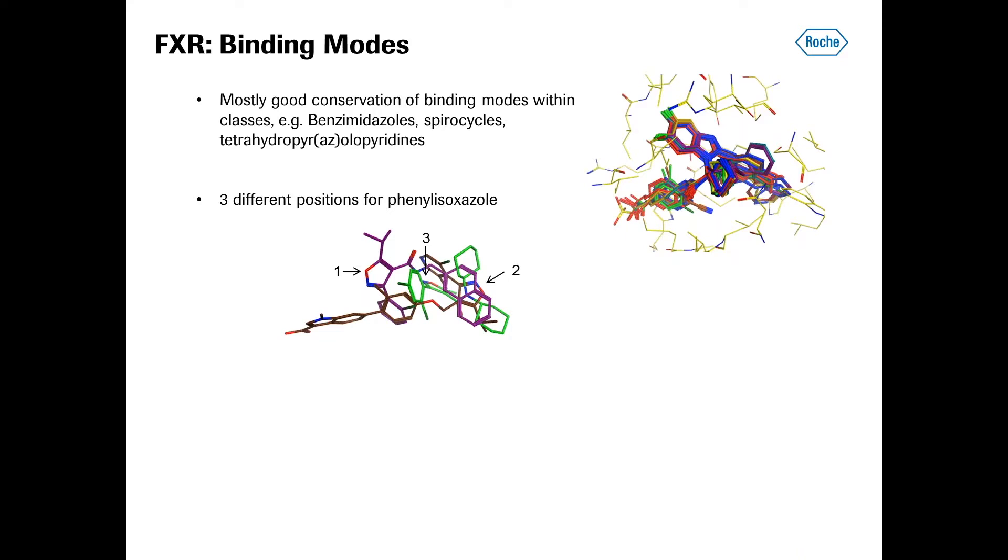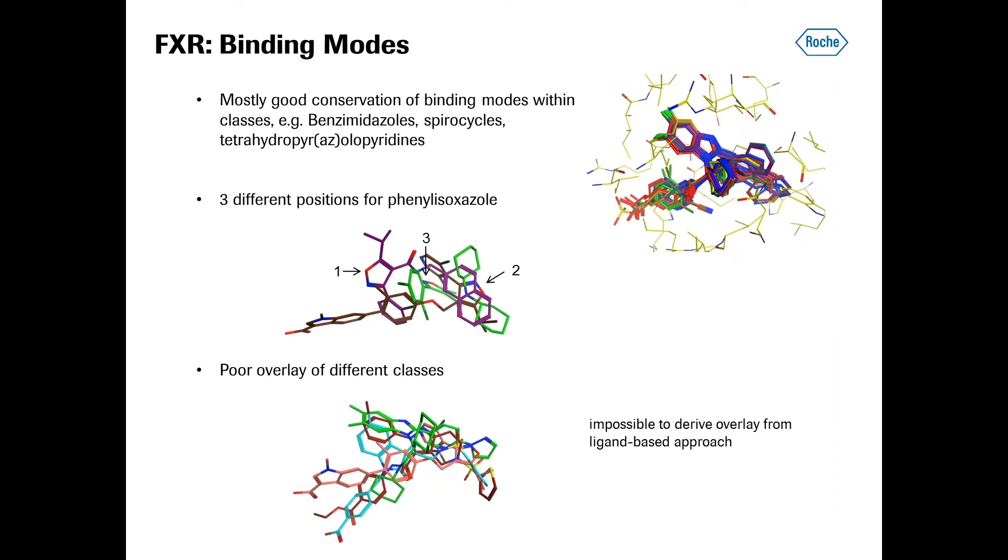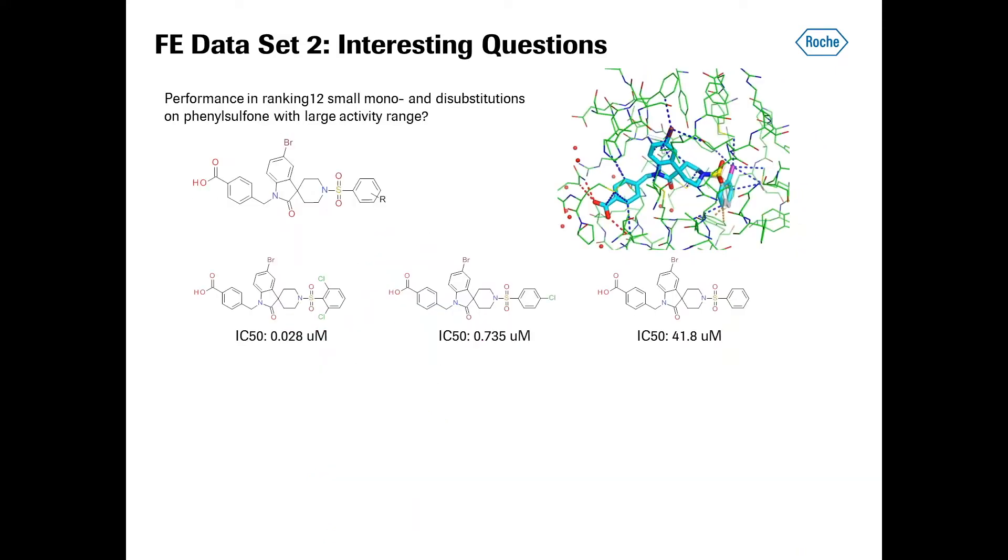This does not apply, however, to the phenyl isoxazoles. In the dataset, there were four phenyl isoxazoles very similarly substituted. If you look at the different binding modes of three of these four phenyl isoxazoles, you see that the phenyl isoxazole ends up in three very different positions in the FXR binding site. And generally, there is very poor overlay of different chemical classes. So clearly, it's very challenging, if not impossible, to derive an overlay from a ligand-based approach only.